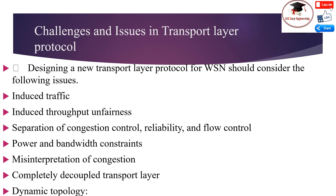Induced Traffic: unlike wired networks, ad hoc wireless networks utilize multi-hop, radio relaying, and link-level transmission that affects the neighborhood nodes of both the sender and receiver of the link. In a path having multiple links, transmission at a particular link affects one upstream link and one downstream link. This traffic at any given link or path due to traffic through neighboring links is referred to as induced traffic. This is due to the broadcast nature of the channel and location-dependent contention. This induced traffic affects the throughput achieved by the transport layer protocol.